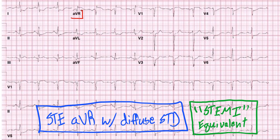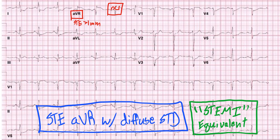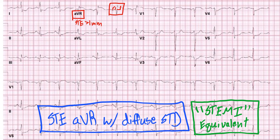First we have AVR. This STEMI equivalent has ST elevation in AVR greater than one millimeter. So here if we look, here's our QRS, and then here is our ST segment. You have this ST elevation here in AVR. You can see that in all the leads — ST elevation, this is AVR right before V1, and again ST elevation, which is this area right here. So you have greater than one millimeter of ST elevation in AVR.